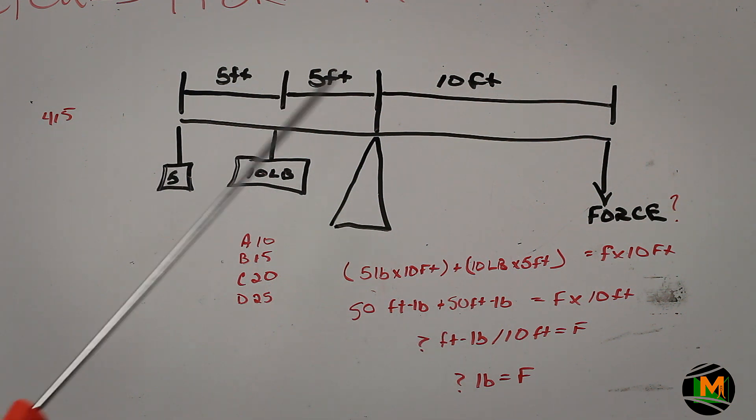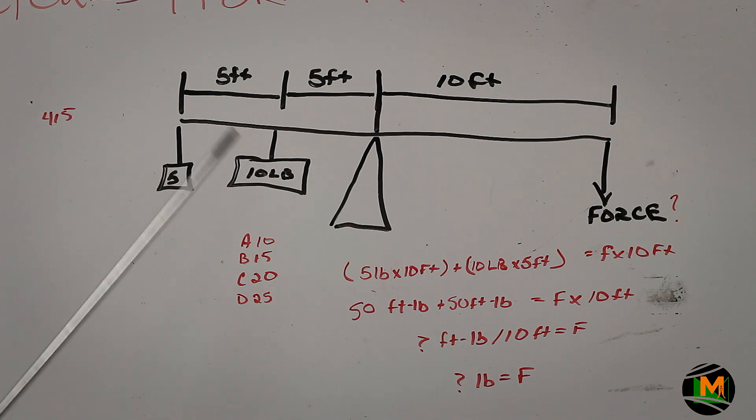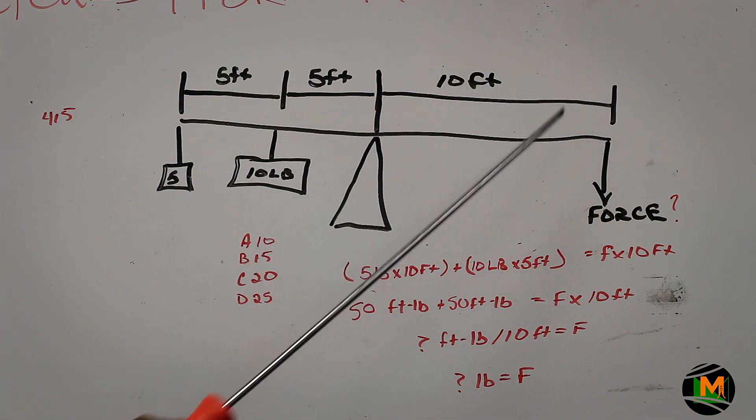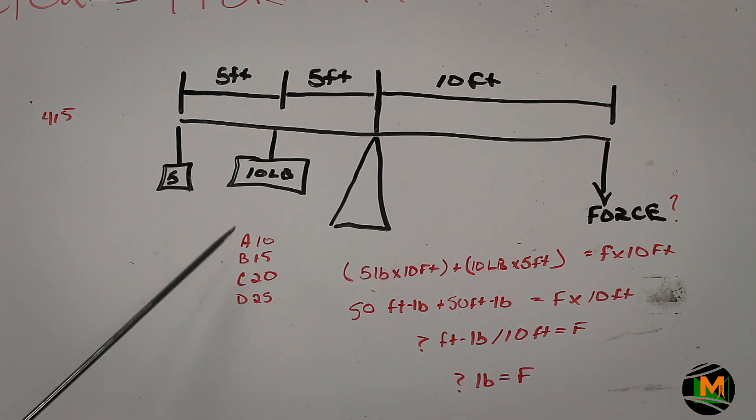Then you would also multiply this distance, 5 feet, times 10 pounds, which will give you 50. If you add those two together, you would get 100 foot pounds. Then you would do 100 foot pounds divided by the total of 10 feet here, which will be 100 divided by 10, which will give you 10 pounds is the force that's required to balance the shaft.